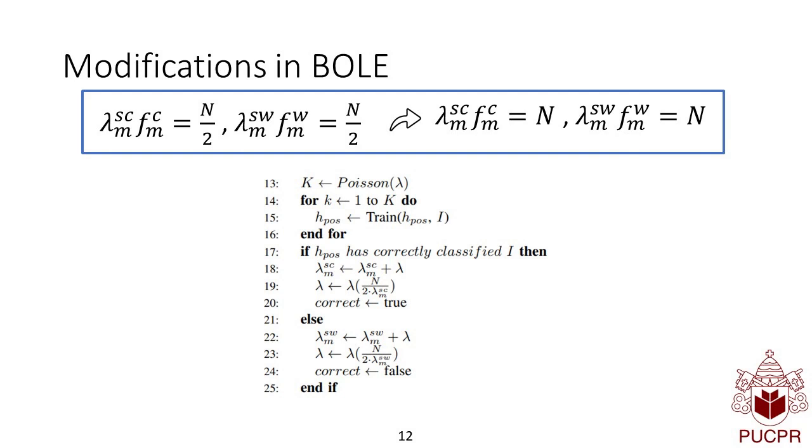That means if a learner correctly classifies an instance, then the lambda parameter used for the instance weighting is weighted by half of the observations, alongside the previous predictions done. We decided to extend this to consider higher values such as the whole observations.